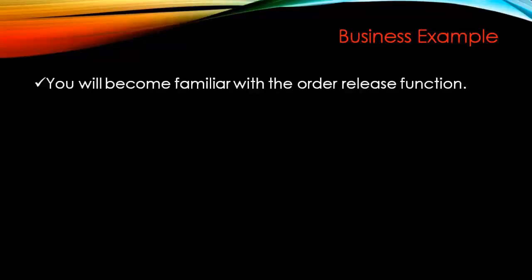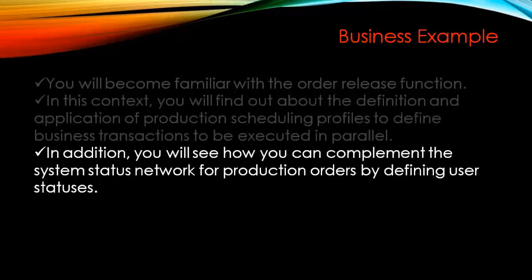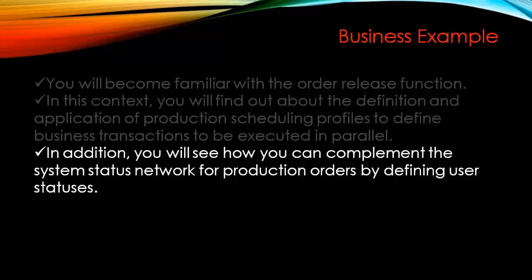Let us start with a business example. You will become familiar with the order release function, and find out about the definition and application of production scheduling profiles to define business transactions to be executed in parallel. You will also see how to complement the system status network for a production order by defining user status, and we'll look at what user status and system status are, and how the production scheduling profile controls automatic functions within the production order.